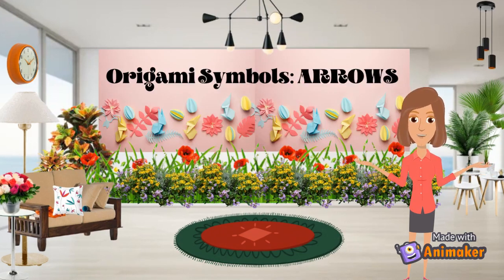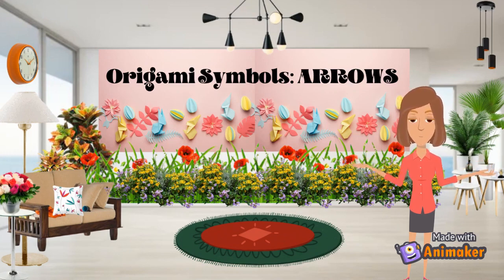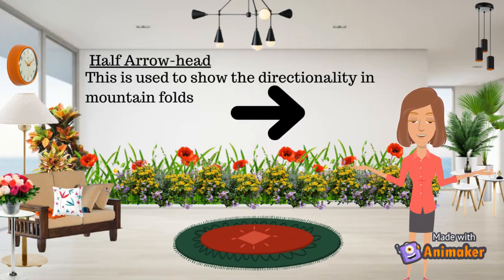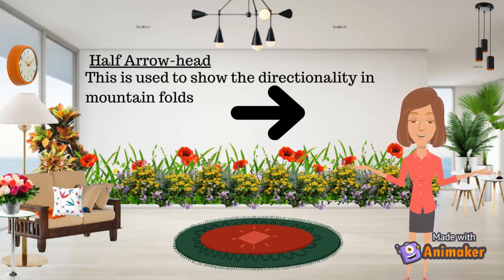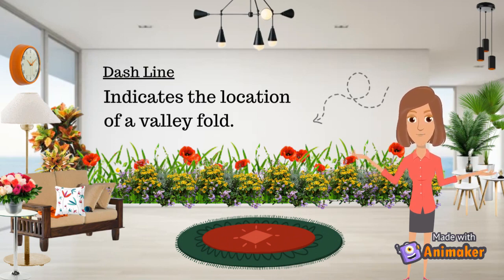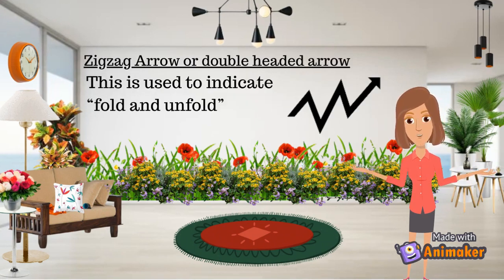Sometimes a dotted line is used to indicate an action that occurs behind the layers of paper. Now we proceed to the arrow symbols used in Origami. The first arrow is the black arrowhead, used to show directionality in a valley fold. The second is the half arrowhead, used to show directionality in mountain folds. The zigzag arrow or double-headed arrow is used to indicate fold and unfold.